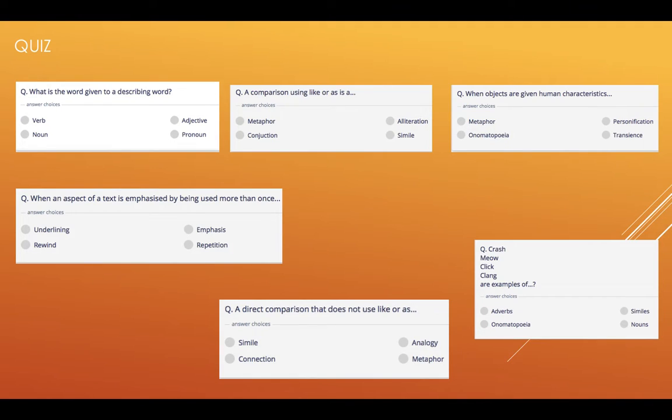Number four, when an aspect of a text is emphasized by being used more than once, repetition. Number five, a direct comparison that does not use like or as, metaphor. Crash, meow, click, clang, onomatopoeia.